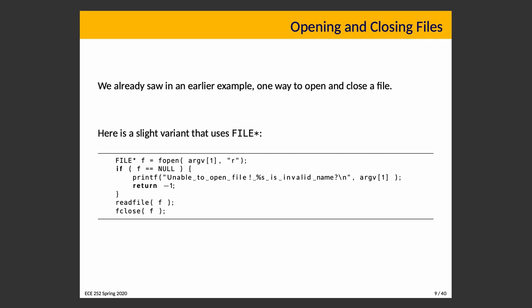The file pointer is returned as the return value of fopen. fopen takes as its arguments the file you want to open and the mode in which you want to open it. If the returned pointer f is null, something went wrong — you were unable to open the file. fclose corresponds to fopen. In Unix it is required to open a file before making use of it — this lets you verify that you are actually able to do the operation you intend.